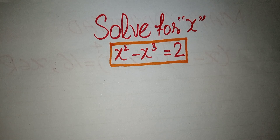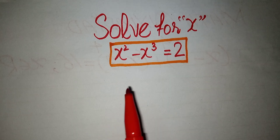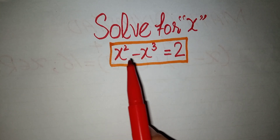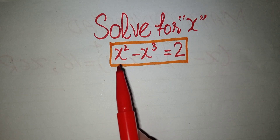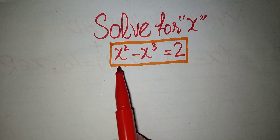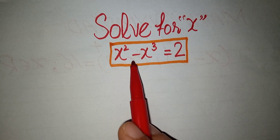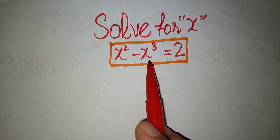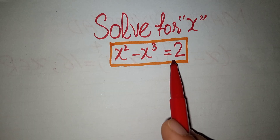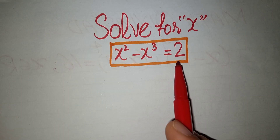Hi guys, welcome to my channel Olympid Learners. Today we are going to solve a nice math Olympiad algebra equation: x squared minus x cubed is equal to 2.